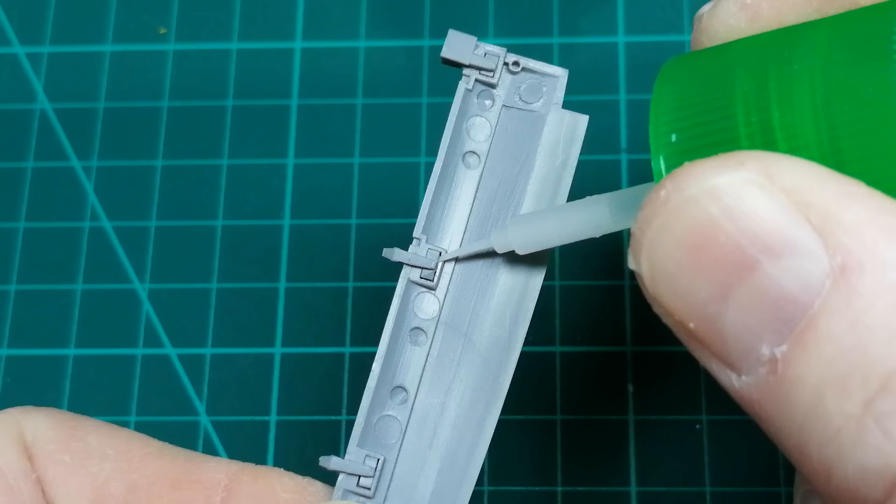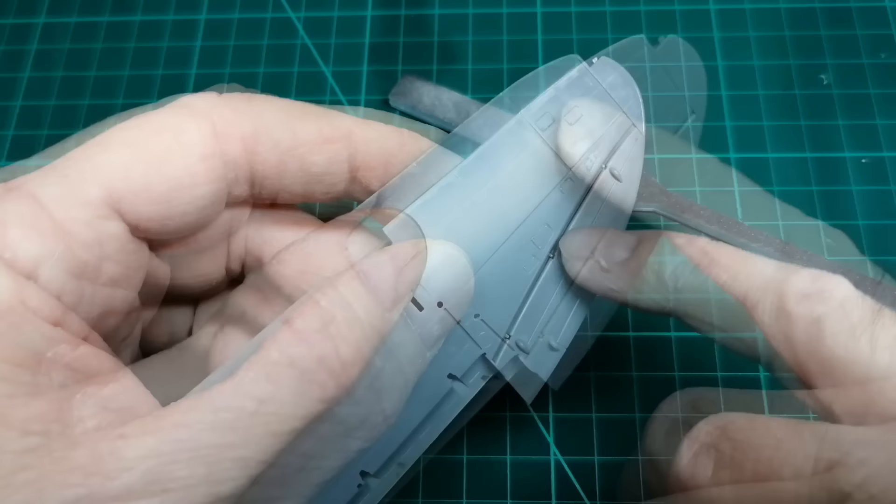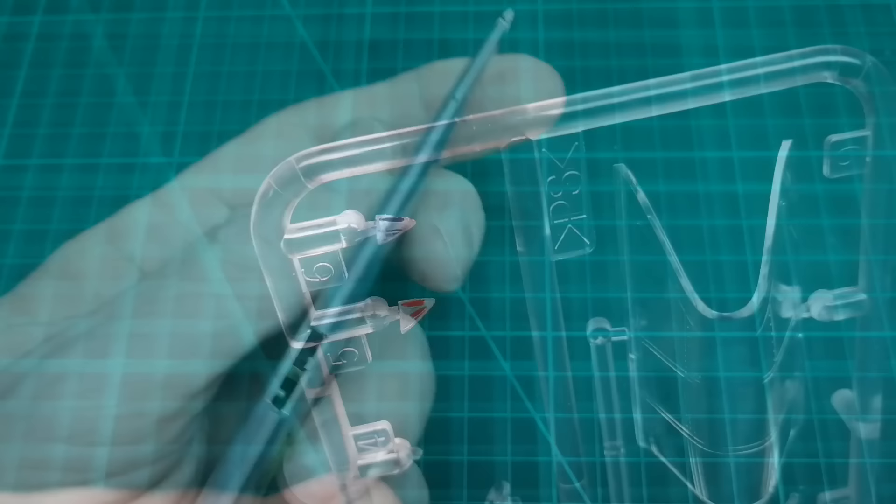I just want to point out the Tamiya engineering here. The wing assembly, just the front seam is all it needs cleaning up. The other seams are or will be hidden. The back straps, the nav lights. These parts will be added at the very end.